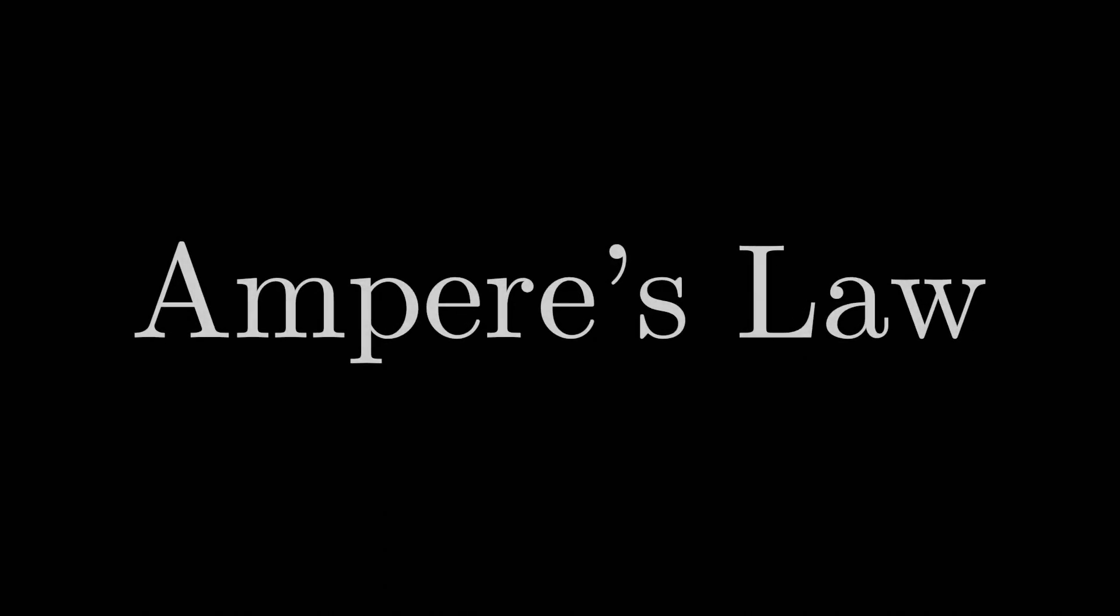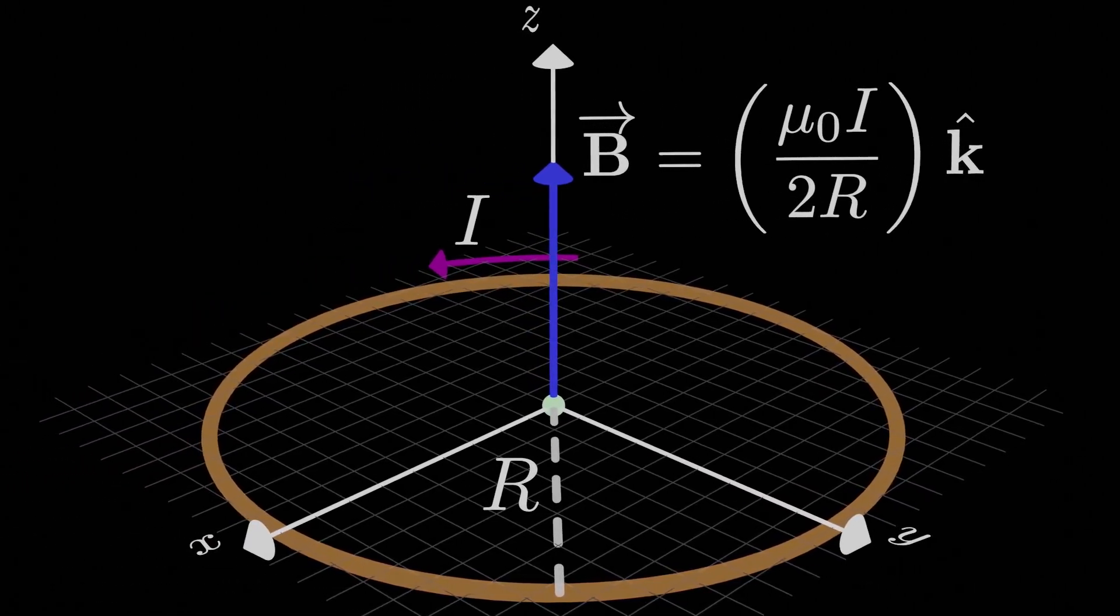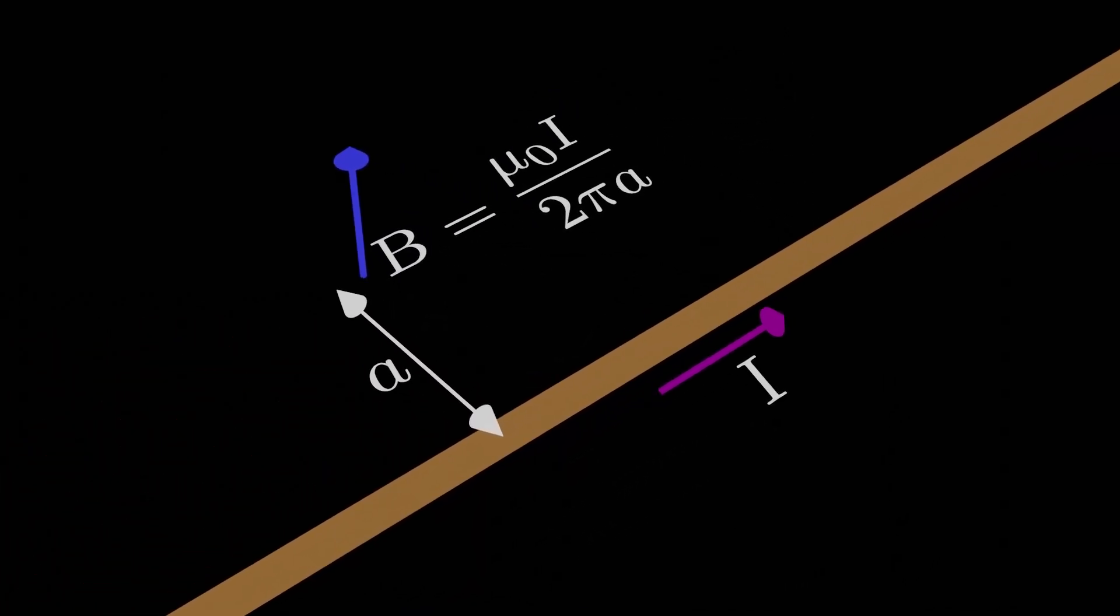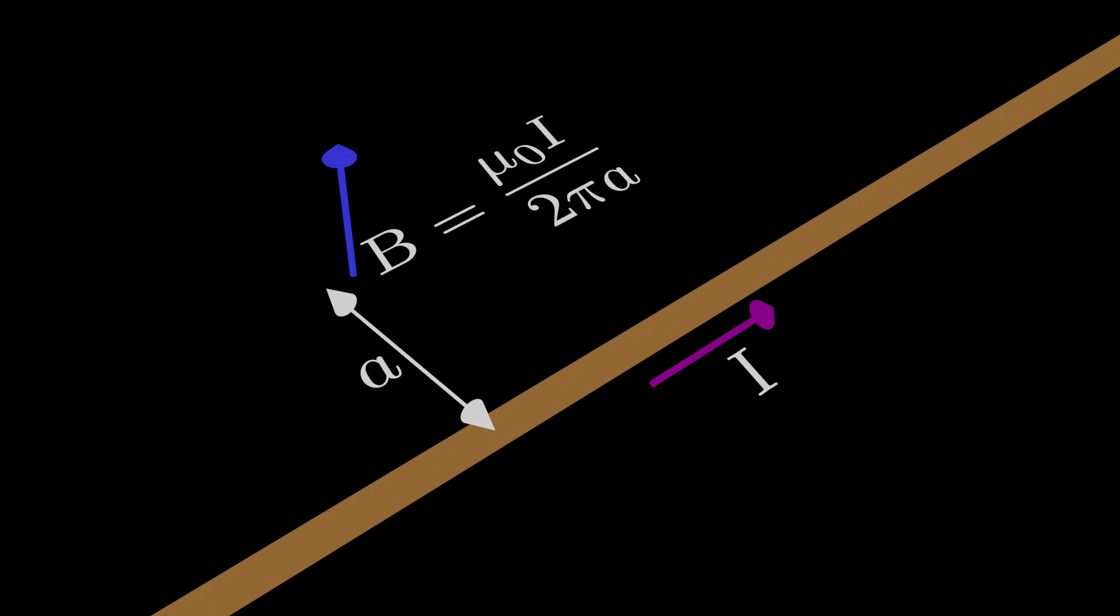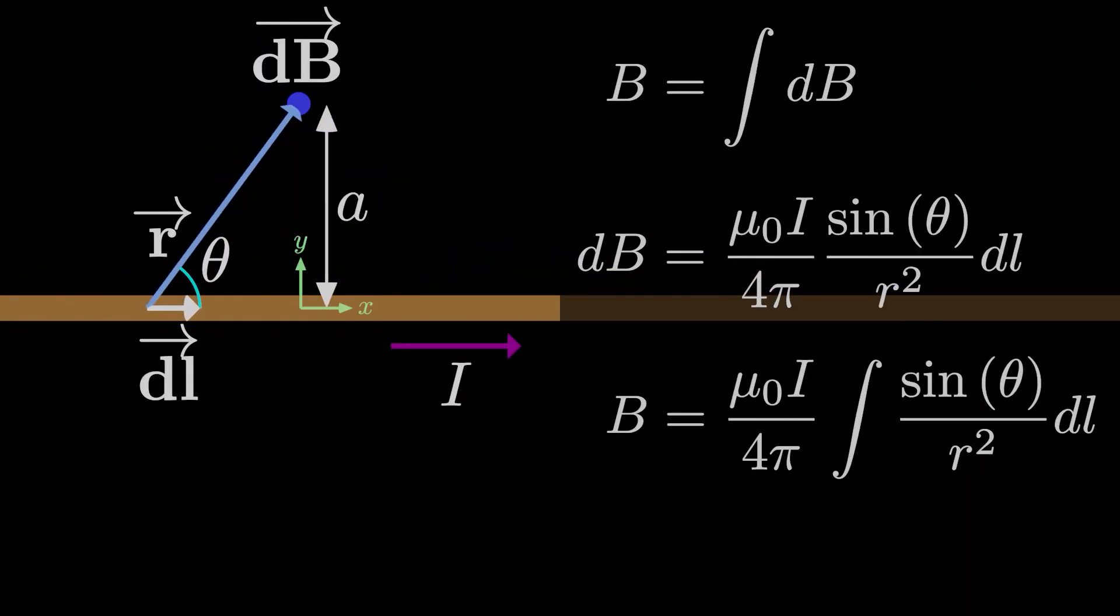In the previous lesson, we learned about the Biot-Savart law and how we can use it to determine the magnetic field at any point in space due to all the current elements near that point. We found the magnetic field at the center of a current loop and the magnetic field at a point away from an infinitely long current-carrying wire, which was a lot of fun, wasn't it? Who am I kidding? It was a nightmare. If you thought to yourself, there's got to be a better way to do this, you're actually in luck.